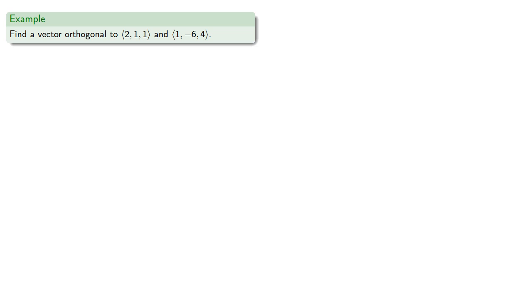What if we have two vectors? Remember if two vectors are orthogonal, their dot product is 0. So if (x1, x2, x3) is orthogonal, we have the dot product with (2, 1, 1) being 0, and so that gives us the equation.